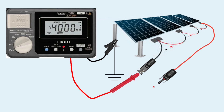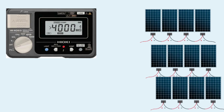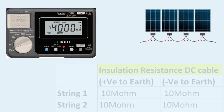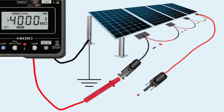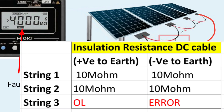Similarly, test the IR value between the negative terminal and earth — but only if the previous IR value between the positive and earth has passed. Test all strings in the same manner to get IR values between positive-to-earth and negative-to-earth for multiple strings. If any cable is tampered with, cut, or damaged, it will be caught in the test showing lower values and failing.